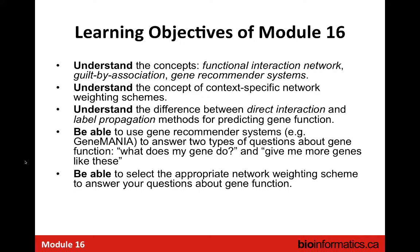When applying guilt by association, there are two ways it can be inferred. One way is by direct interaction — do you directly interact with genes that have this function? The other way is label propagation, which came up in Robin's lecture in the form of modules. The idea is: can you identify groups of genes that are all interacting with one another? If you're a member of one of these modules, you're more likely to share a function with those genes already in that module.